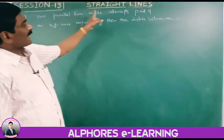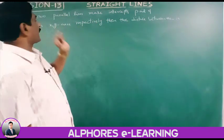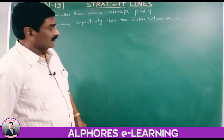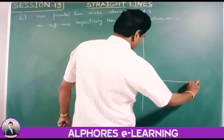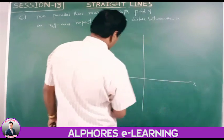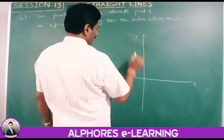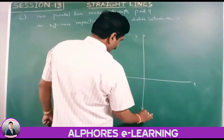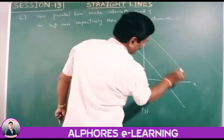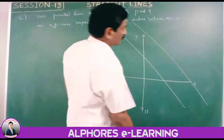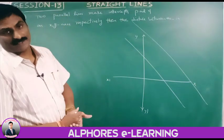Two parallel lines make intercepts P and Q on the x and y axes. Suppose the two parallel lines are AB and CD, where A and C are on the x-axis and B and D are on the y-axis. The distance between two parallel lines is always constant.